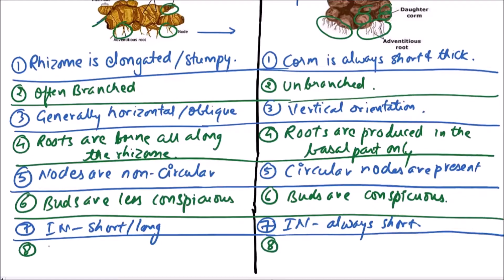A rhizome can live for several years. But a corm can live for one to three years usually.